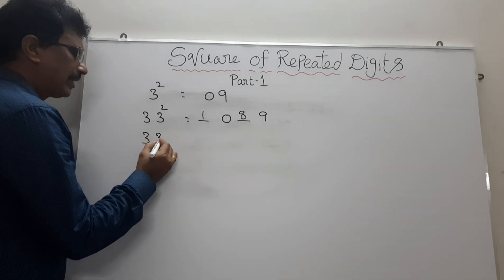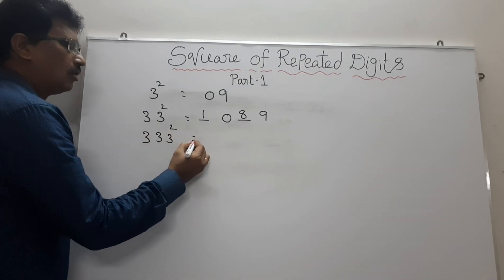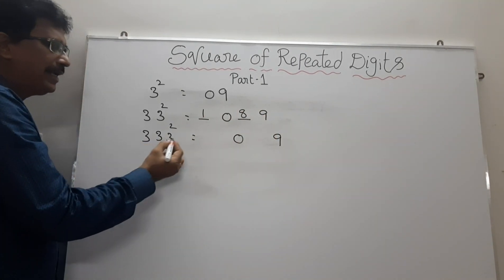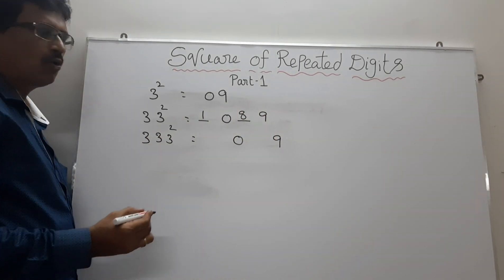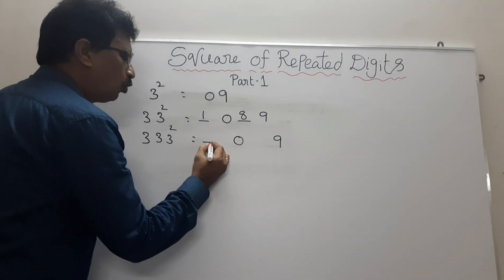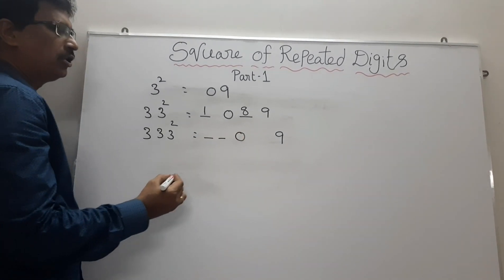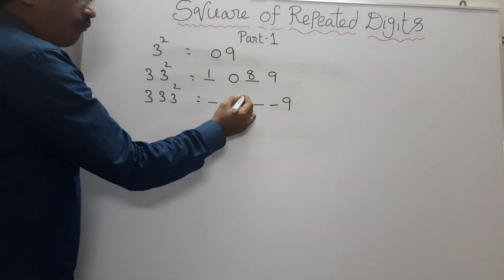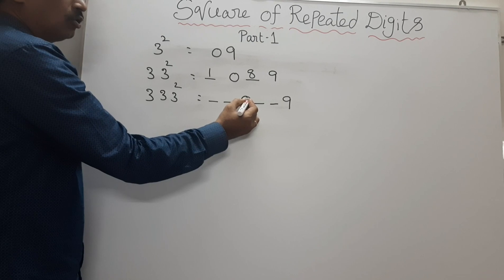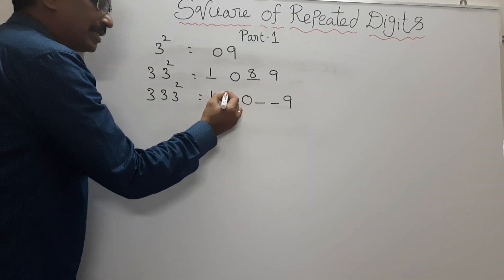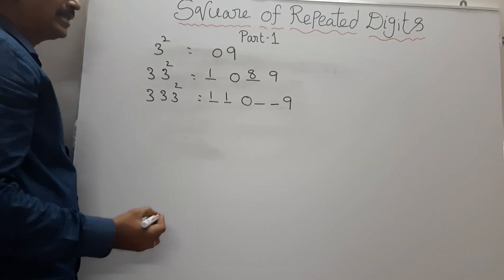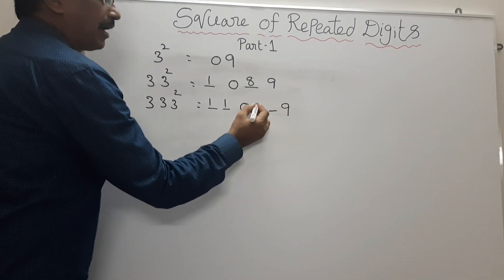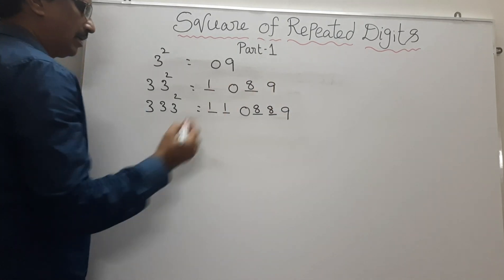Suppose 333 squared equals to — we know that 3 squared is 09. Here there are 3 digits, so we have to insert 2 blanks before 0 and 2 blanks after 0. Adding 1 to 0: 0 plus 1 is 1. We write the same number 1 as it is. Here it is 9, and we have to subtract 1: so 8, 8, 9. That's all — 333 squared equals to 110,889.